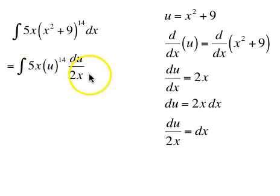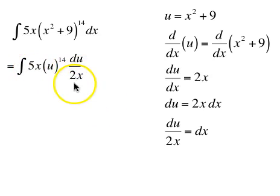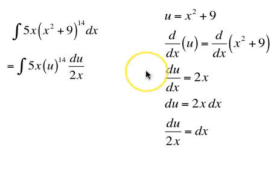The good news is all of the x's go away — this x and this x divide out. 5 is upstairs, 2 is downstairs, that's 5 halves. The x's go away, leaving 5/2 times u to the 14th du.